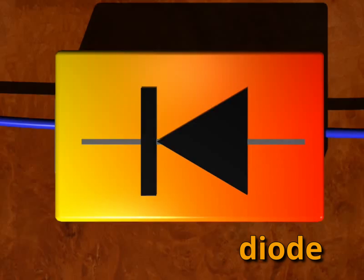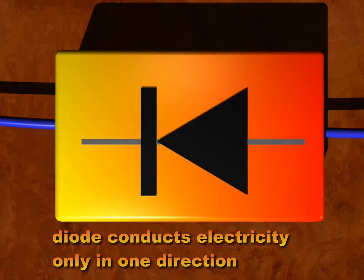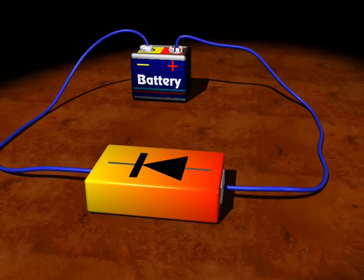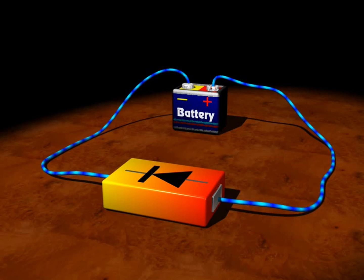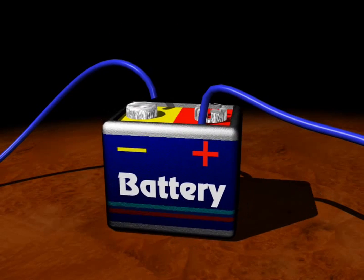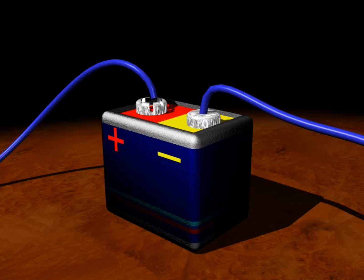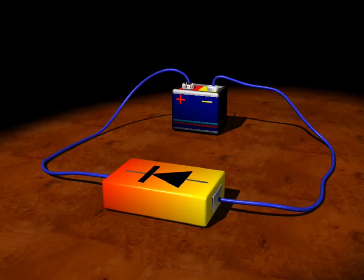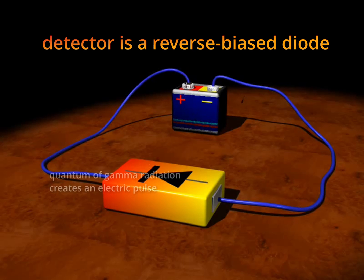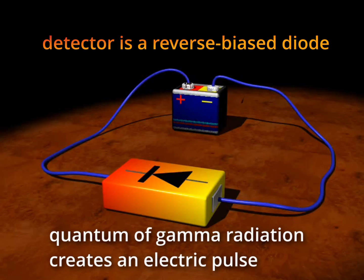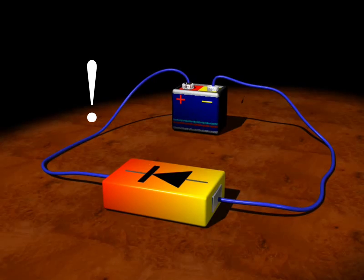Now let's think about how the detectors detect gamma radiation. A diode is a device which conducts electricity in only one direction. If we put a voltage so that plus is here and minus here, the electric current will flow through the diode. If we change plus and minus, the electric current can't flow. But if a diode is hit by a quantum of gamma radiation, it creates electrons and holes in the diode, causing a pulse of electric current to flow. The size of the pulse will depend on the energy of the gamma quantum — so not only do we detect the gamma quantum, we are also able to measure its energy.